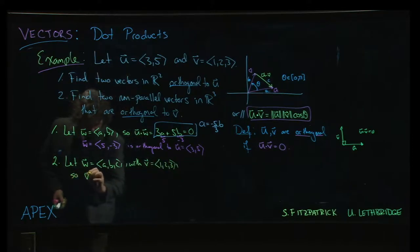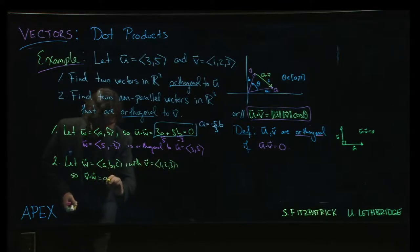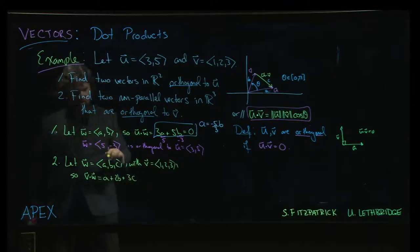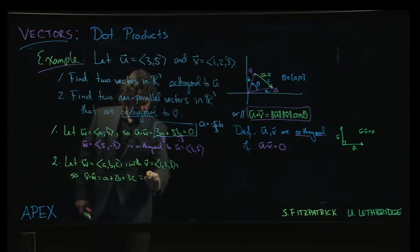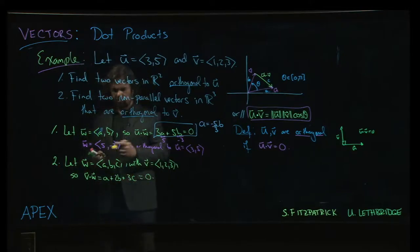We think about what we get this time for the dot product v dot w. We're going to get a plus 2b plus 3c, and we want that to be equal to zero. Well this time there are very many, infinitely many solutions to that equation, but there's even more freedom than we had here.